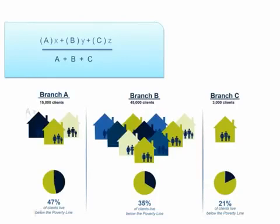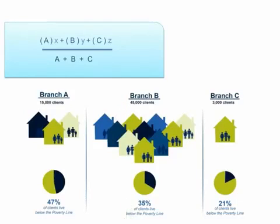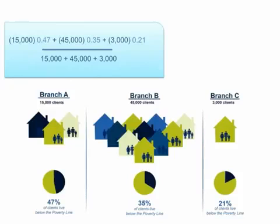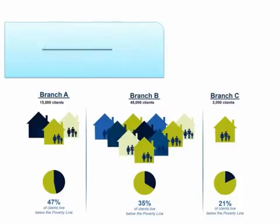Here's an example. Branch A administers the PPI to 15,000 clients and finds that 47% of them live below the poverty line. Branch B surveys 45,000 clients and finds a poverty rate of 35%. Branch C surveys 3,000 clients and finds a poverty rate of 21%. This organization estimates that 37.2% of all clients live below the poverty line.